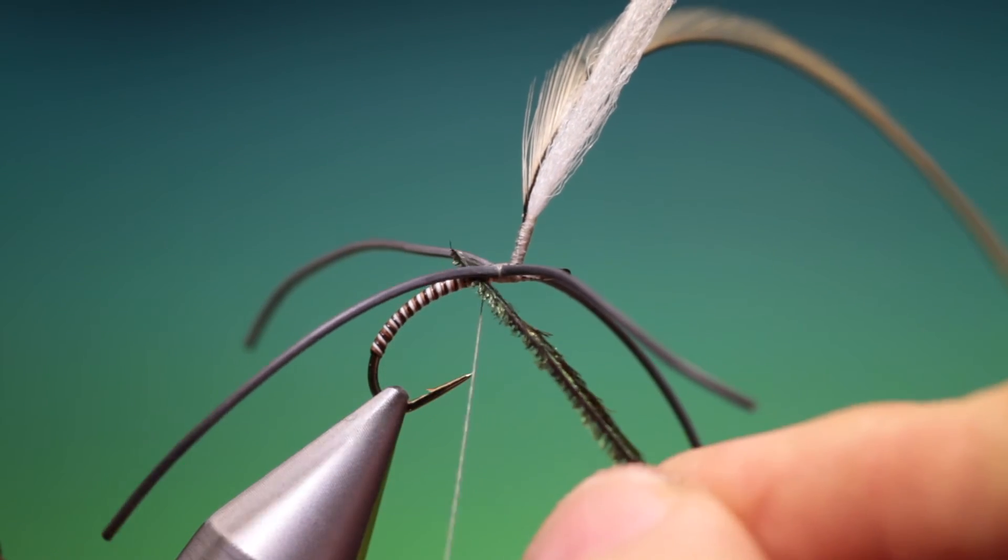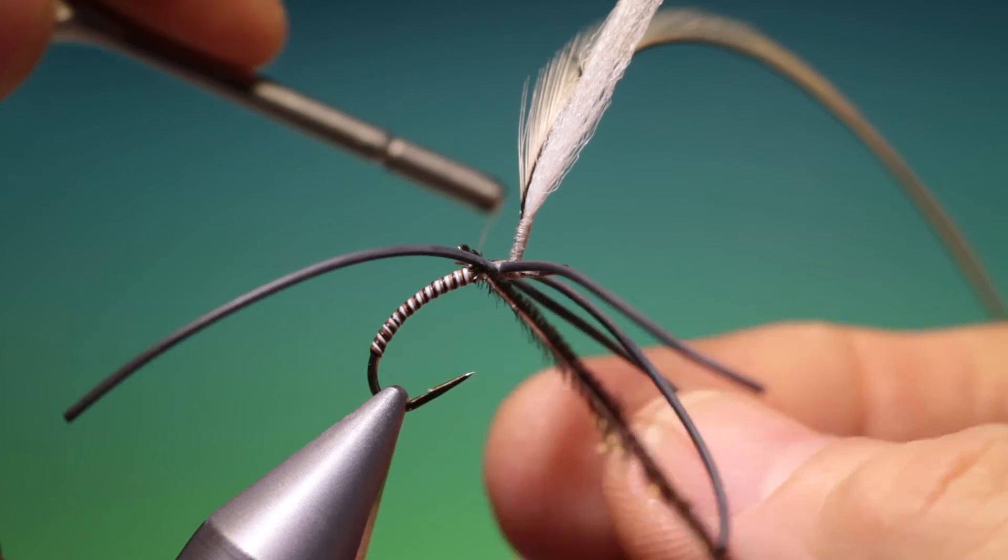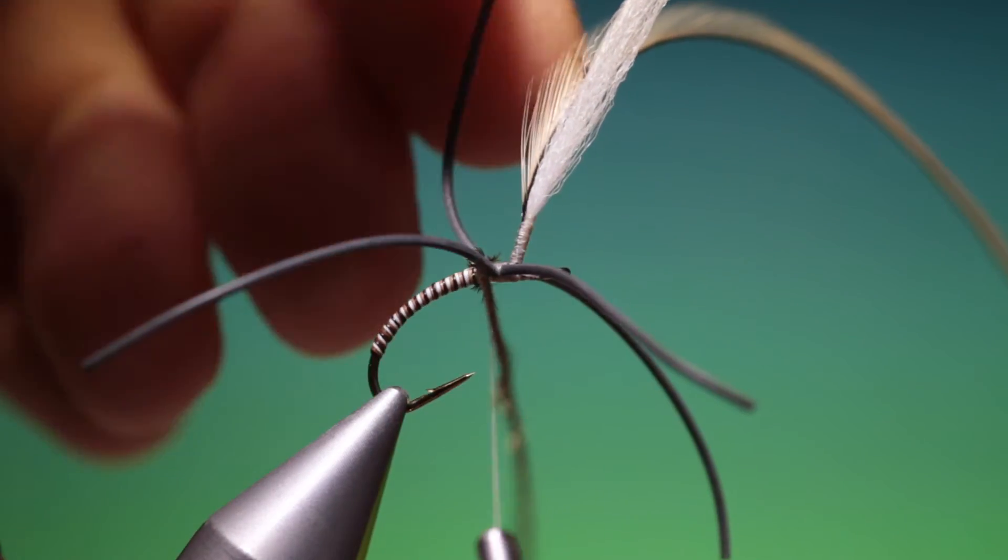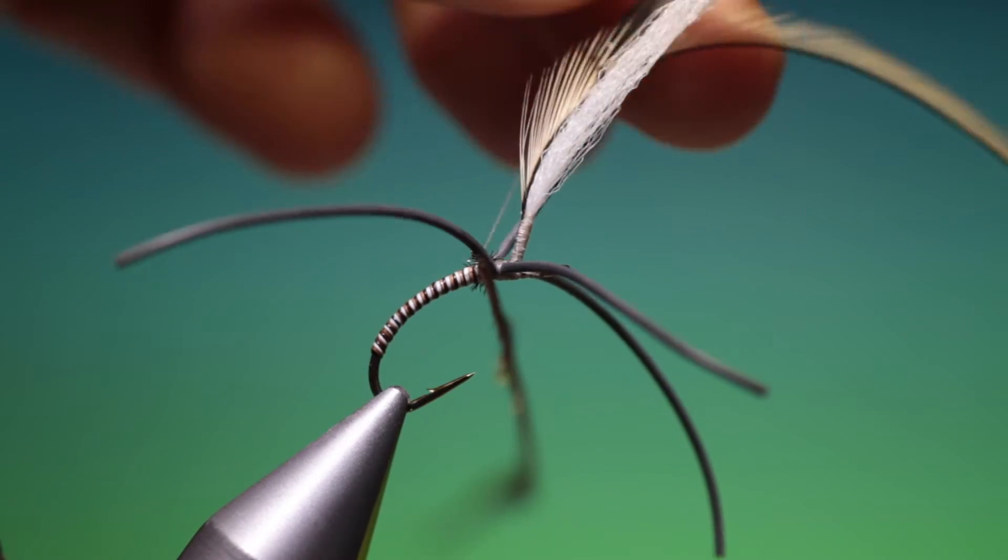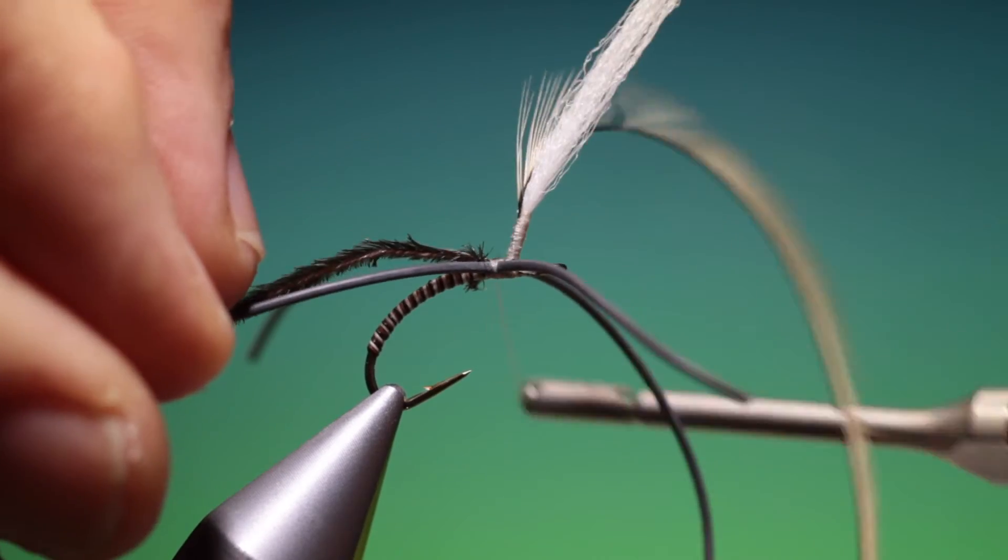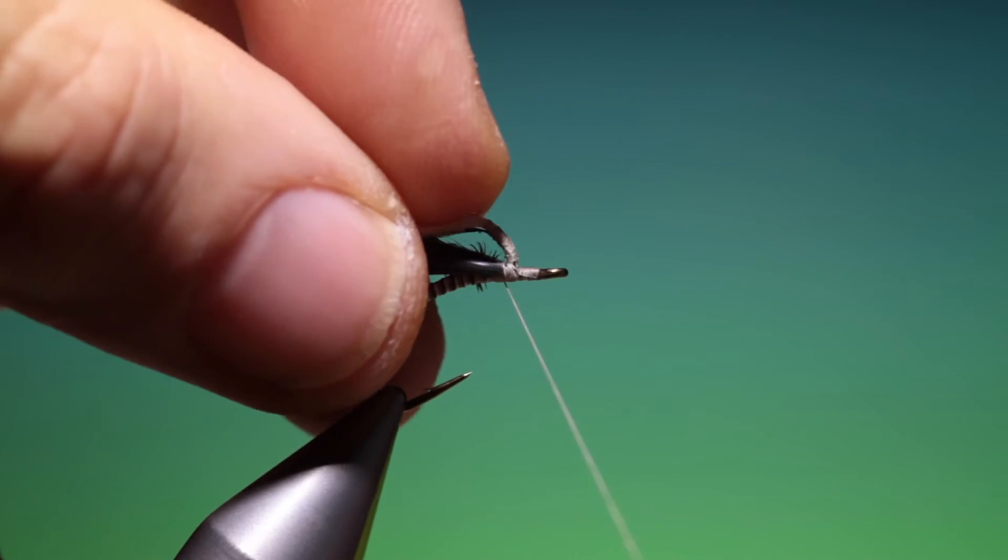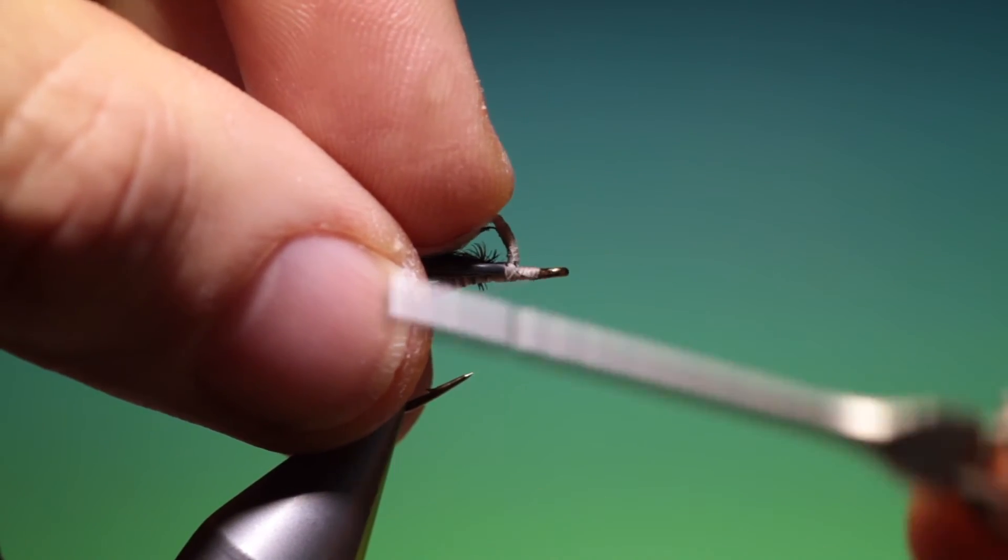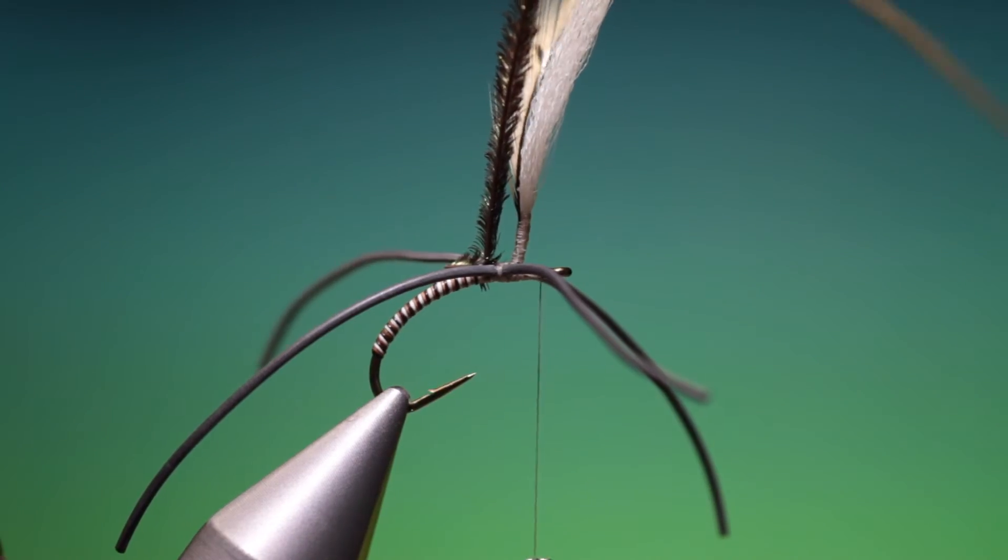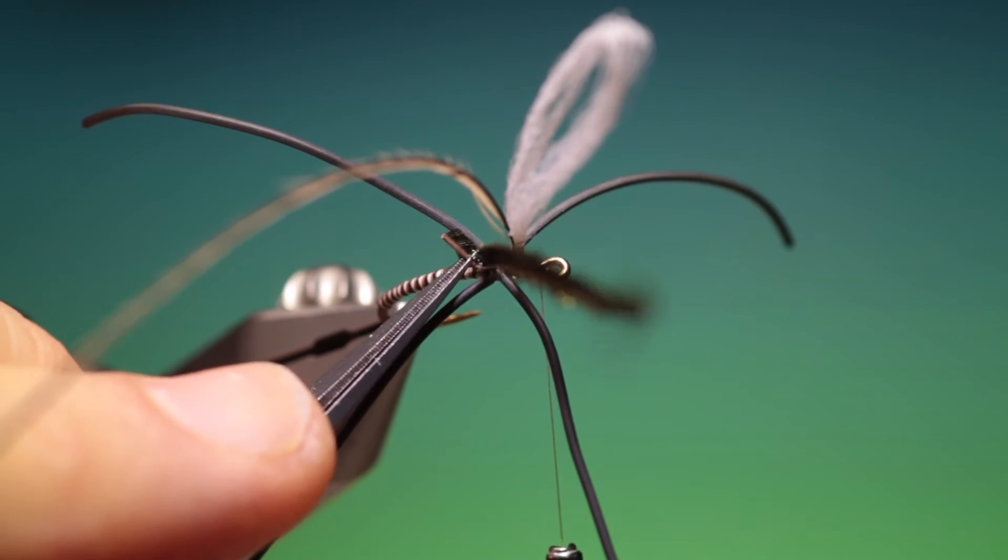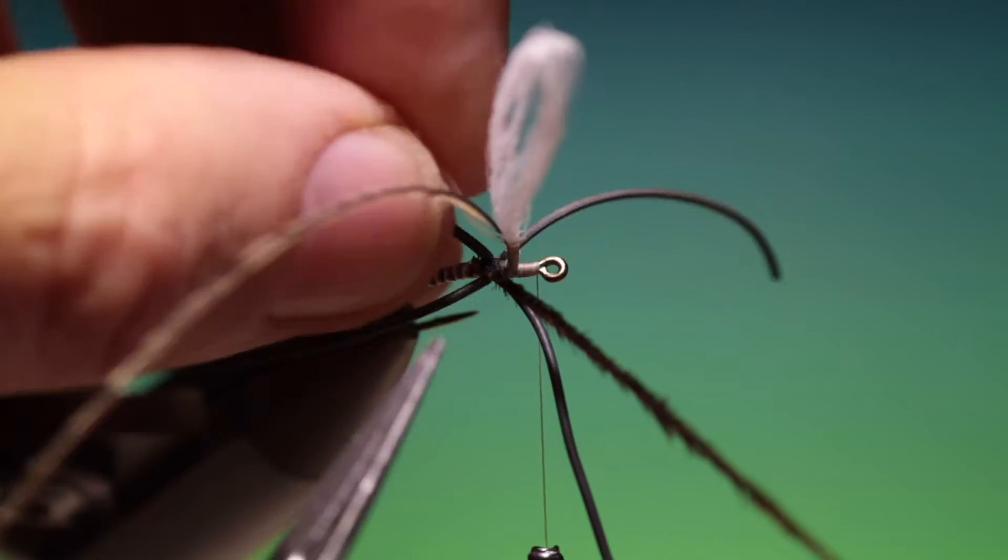Then we need a peacock herl. And just tie that off. It's a little fiddly with the legs in the way. But with a little patience. You'll manage. And then we go forward. A little bit of that herl there sticking out the back. There we are.